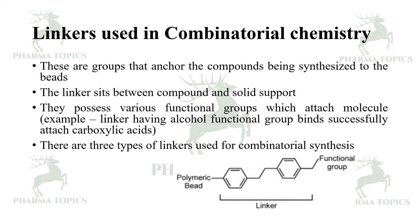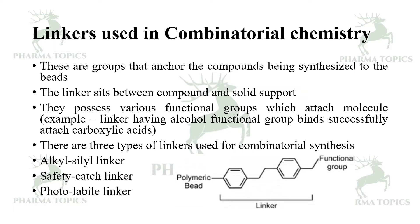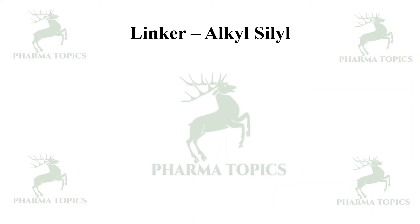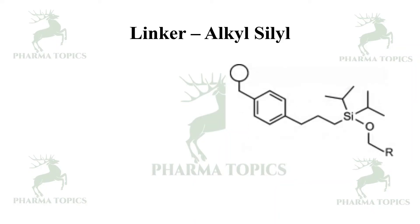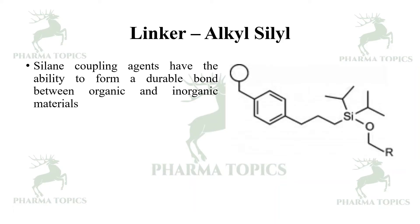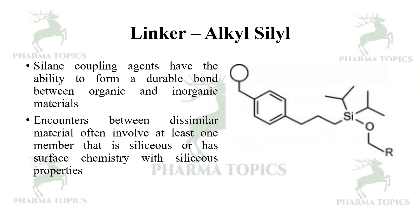There are three types of linkers used in combinatorial synthesis: alkyl-silane linker, safety catch linker, and photolabile linker. The alkyl-silane linker contains a silane group. Silane coupling agents have the ability to form a durable bond between organic and inorganic materials. Encounters between dissimilar materials often involve at least one member that is siliceous or has surface chemistry with siliceous properties.